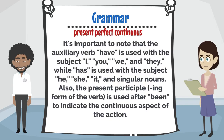It's important to note that the auxiliary verb 'have' is used with the subjects I, you, we, and they, while 'has' is used with the subjects he, she, it, and singular nouns. Also, the present participle is used after 'been' to indicate the continuous aspect of the action.